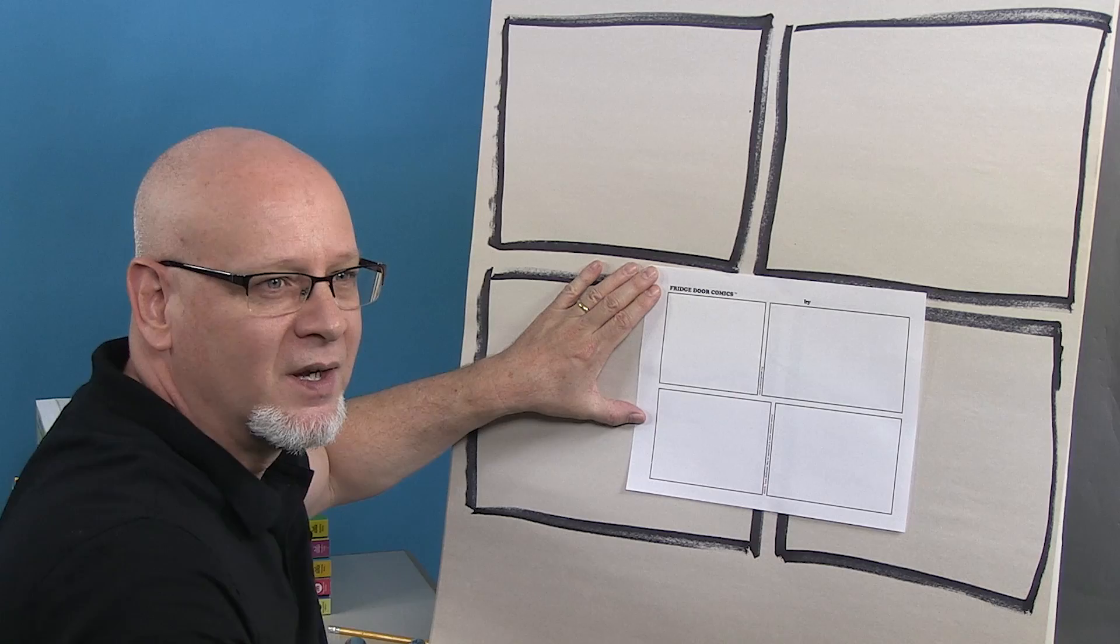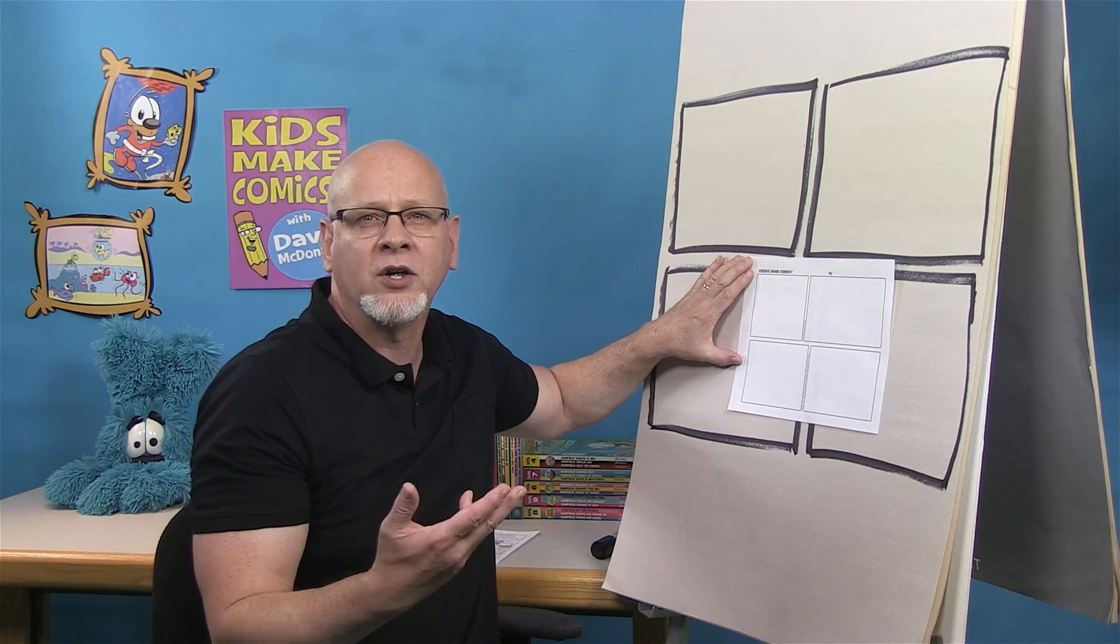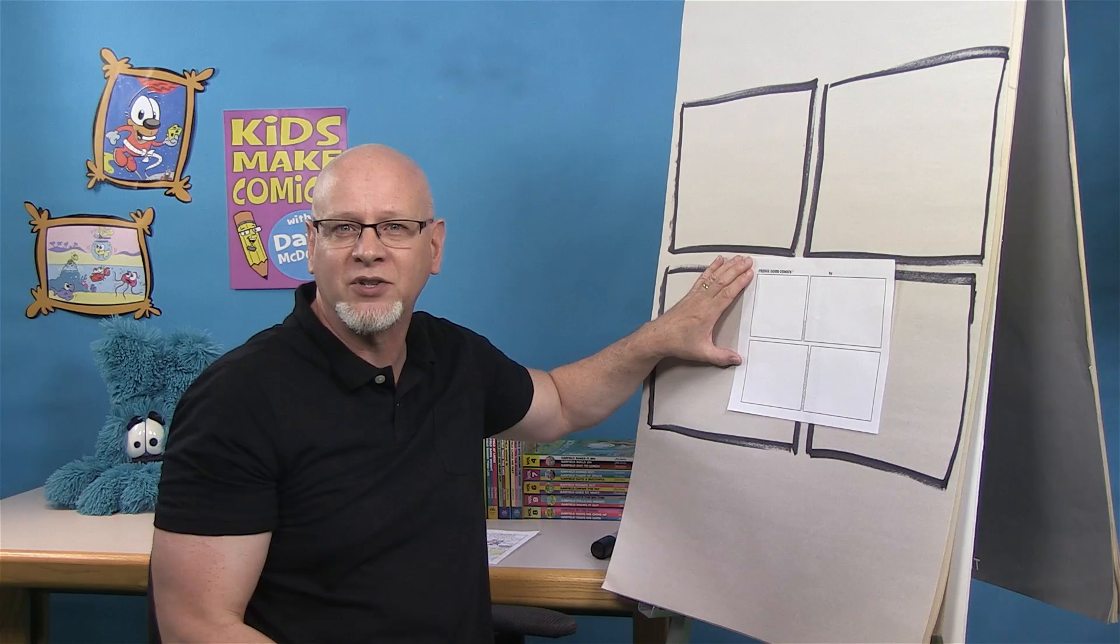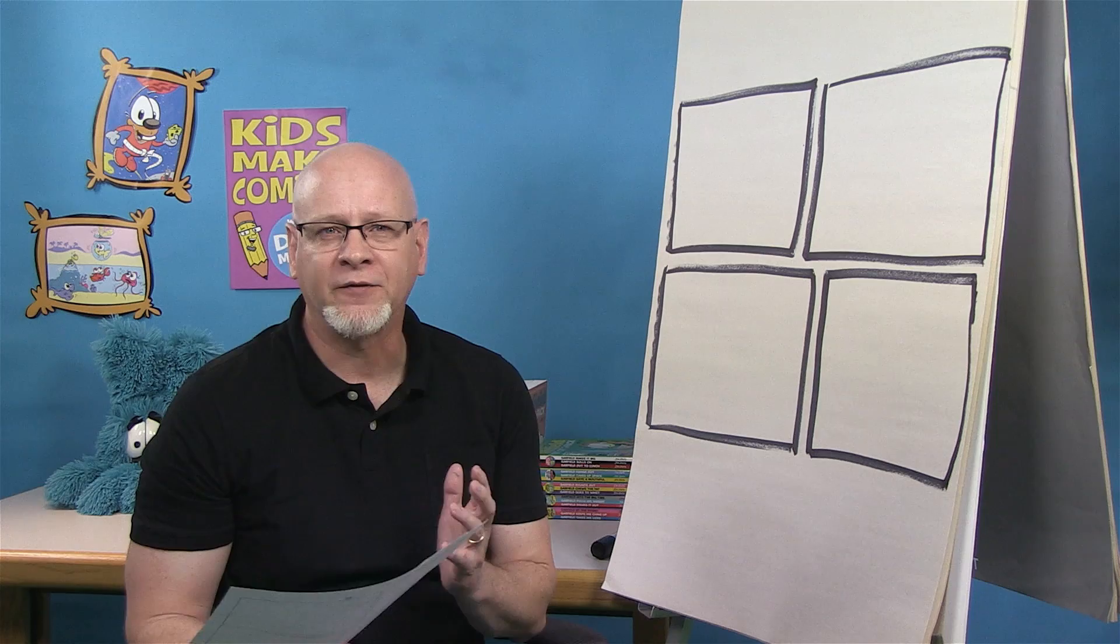You'll need a piece of paper with four panels, like this one, which you can download right from this webpage and print. Of course, you can simply draw your own panels on a blank piece of paper if you'd prefer. Then grab your pencil and maybe some colored pencils or crayons if you want to add color, and let's get started.